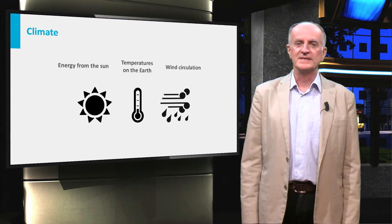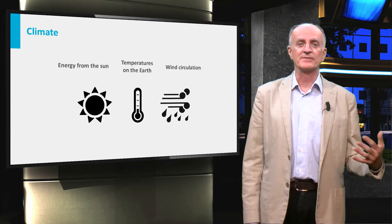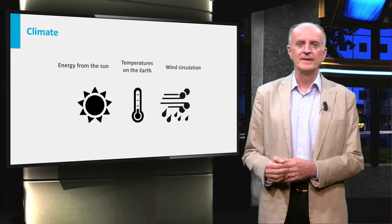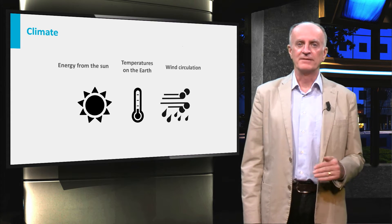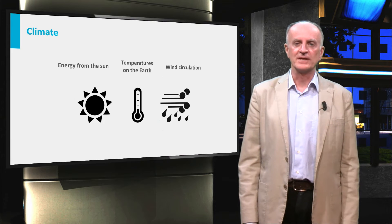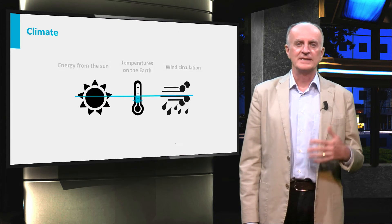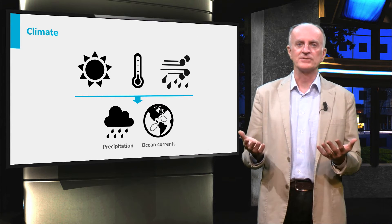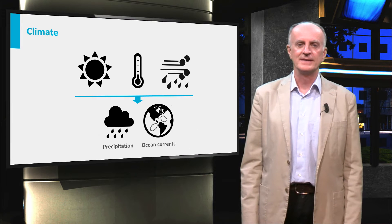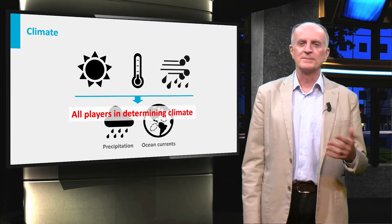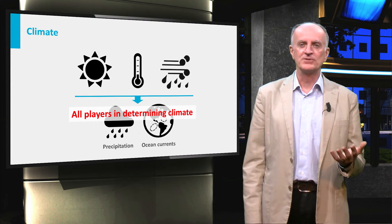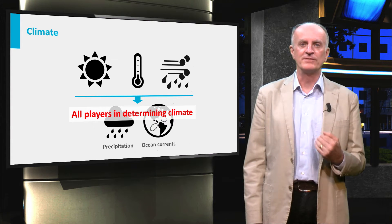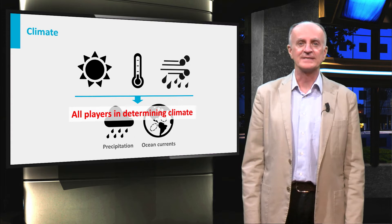In the previous clip we have seen how the energy radiated from the Sun interacts with the atmosphere and the Earth, and controls the distribution of temperatures and the first order pattern of wind circulation on the globe. Temperatures and winds interacting with continents and oceans control precipitation and ocean currents. Temperatures, winds, precipitation and currents are all major players in controlling climate and exerting a major influence on the distribution and type of sediments.